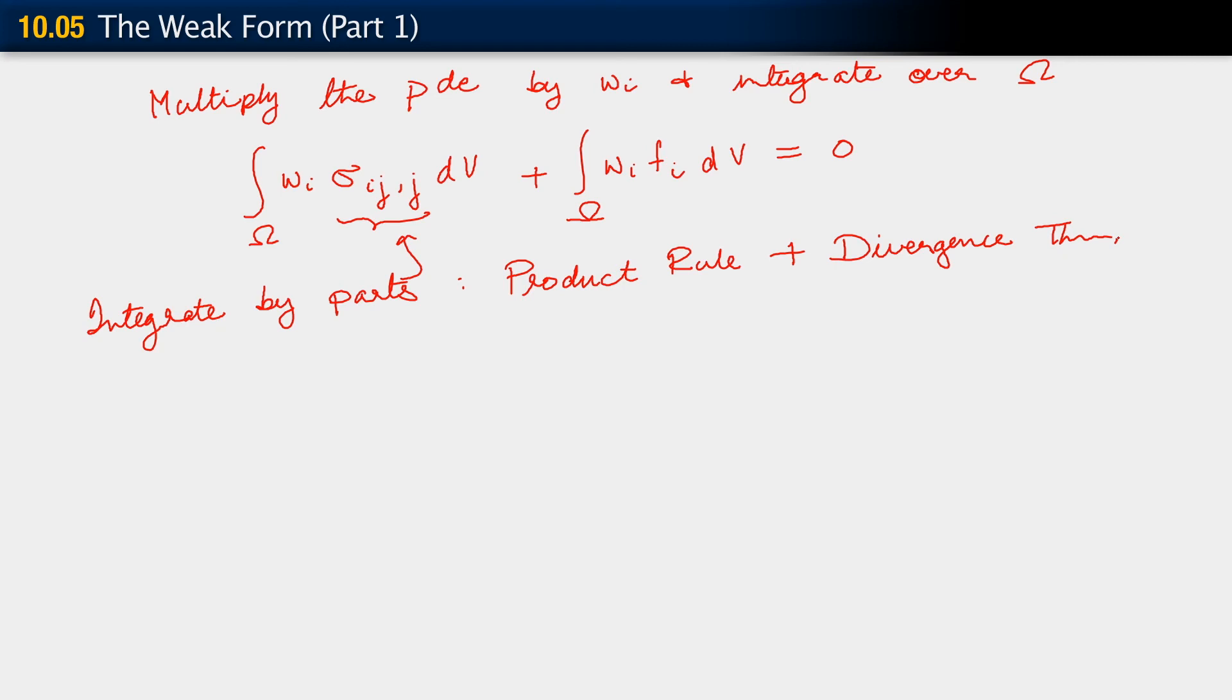What we do here is integrate by parts in that term. In integrating by parts, remember that this is basically product rule of differentiation plus the divergence theorem. The way we do that is the following: we observe that derivative on sigma can be rewritten. Integral over omega, a derivative of the whole product (w_i sigma_ij),j minus an integral over omega w_i,j sigma_ij dV. I've applied the first of my two techniques here - the product rule.